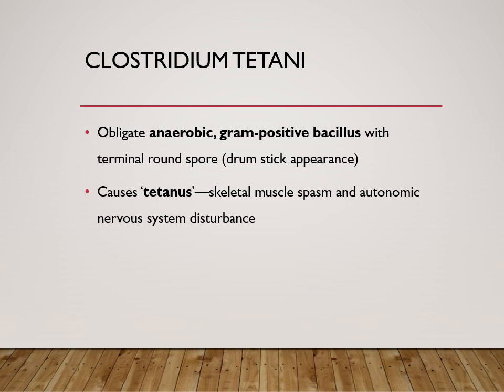Along with that, the autonomic nervous system also gets disturbed. This bacteria is ubiquitous in nature — it is present all over in the environment and in the soil. So if someone gets wounded and comes in contact with the soil, the bacterial spores are present there and they can enter that wound and cause the disease.